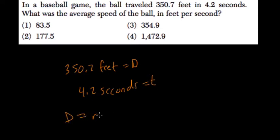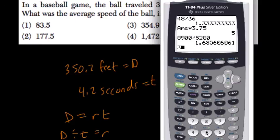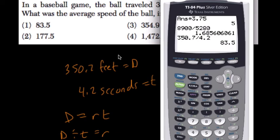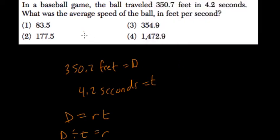Distance equals rate times time, so distance divided by time equals rate. So what is 350.7 divided by 4.2? That gives us 83.5 feet per second — choice one. I hope this helped.